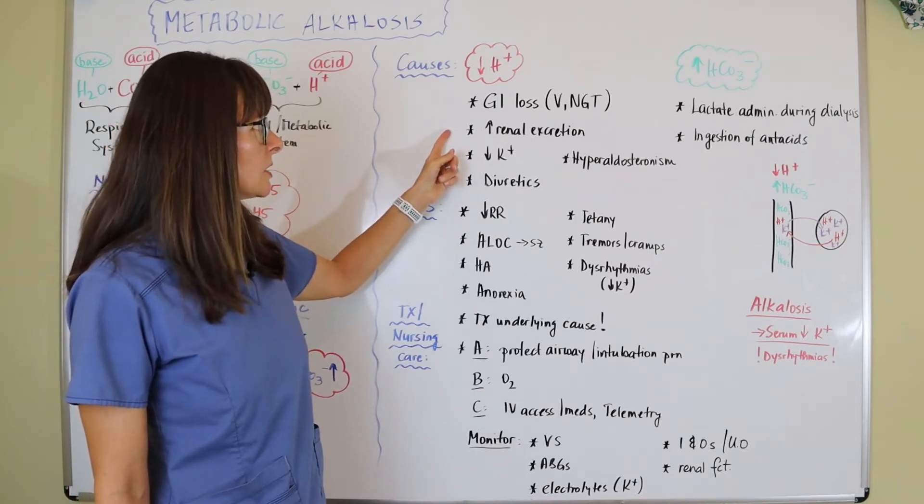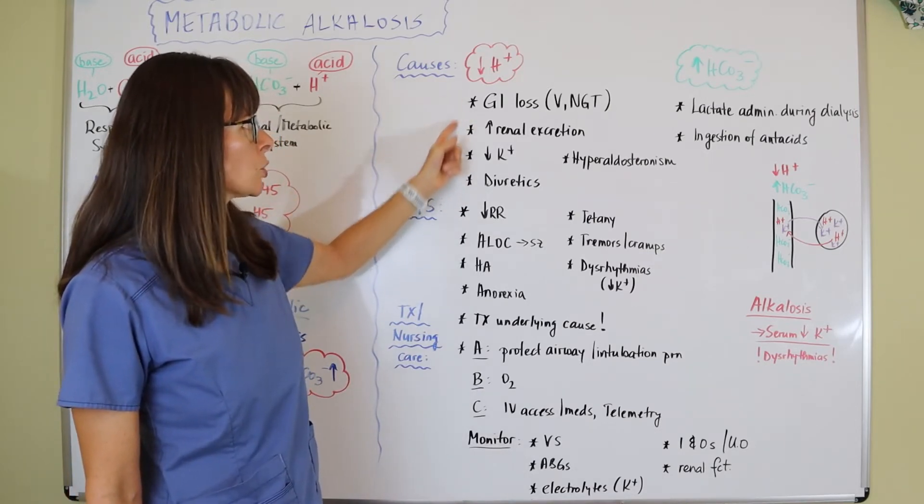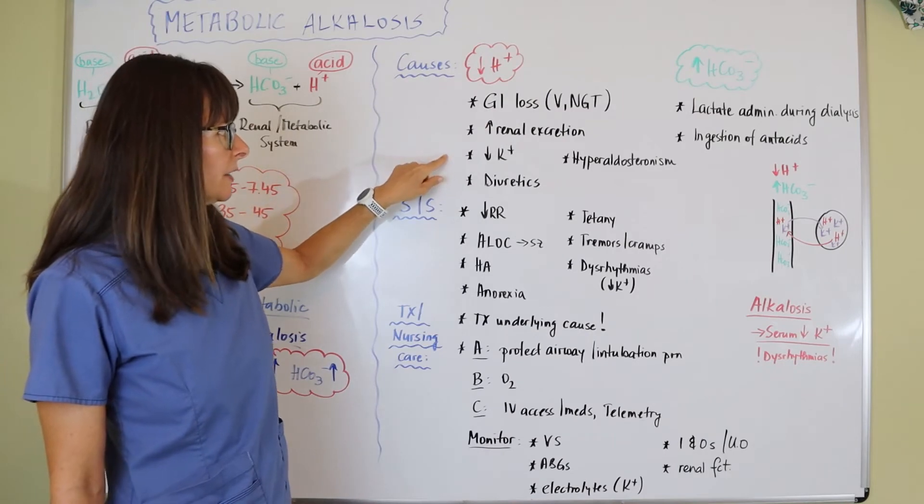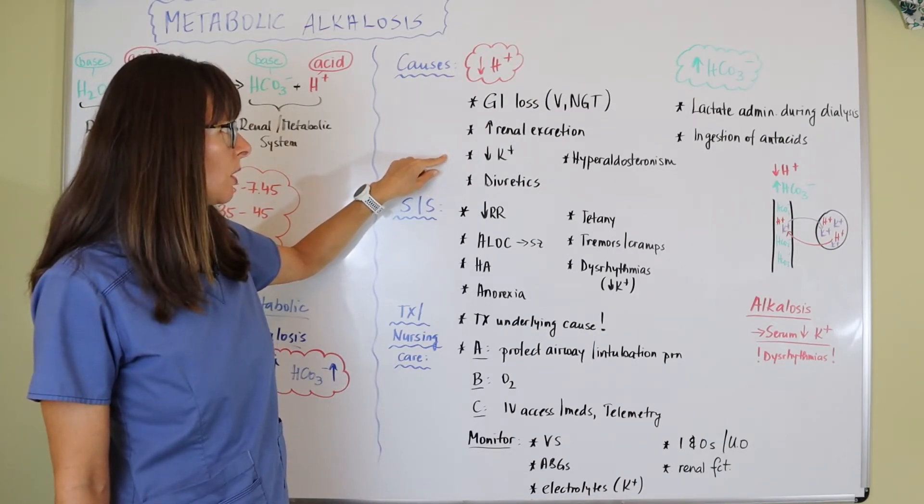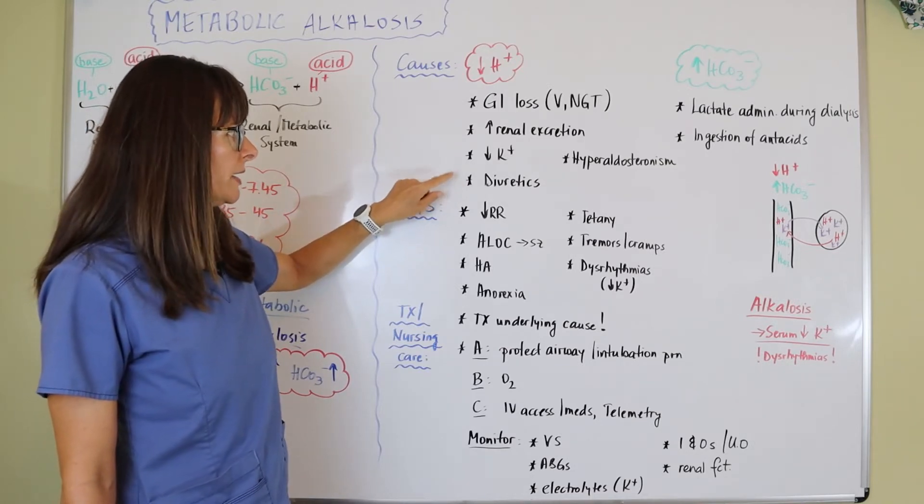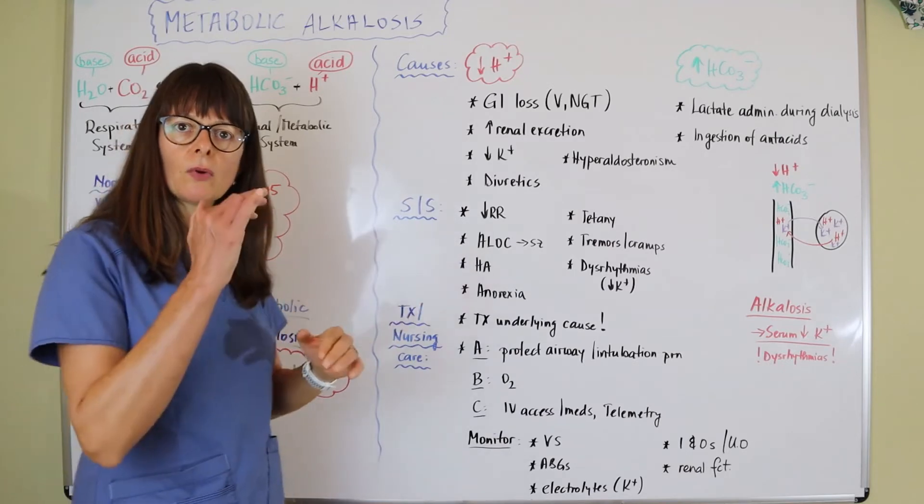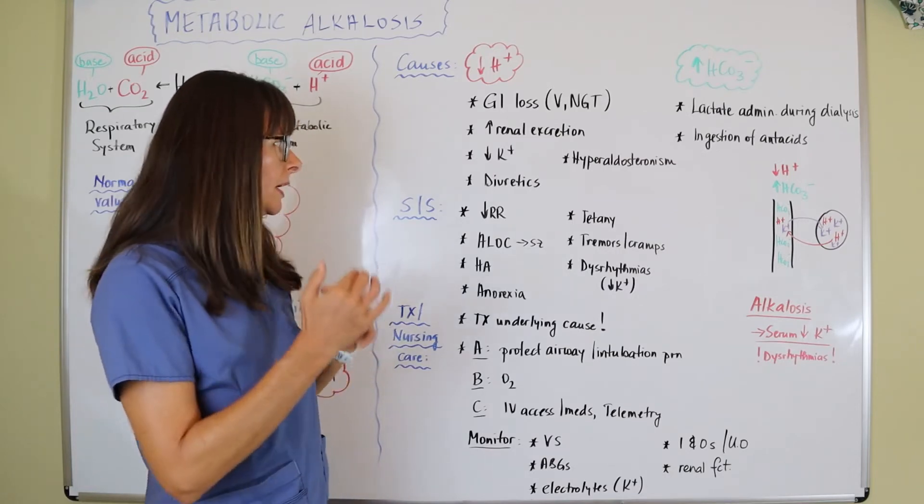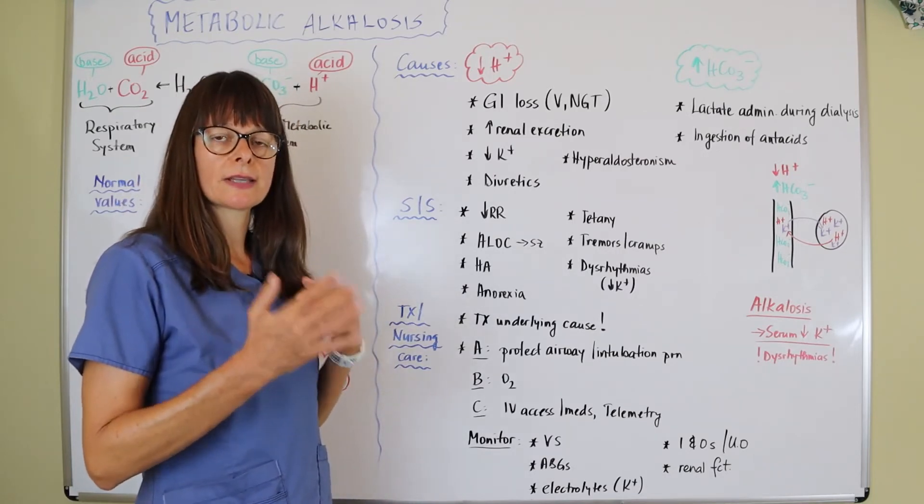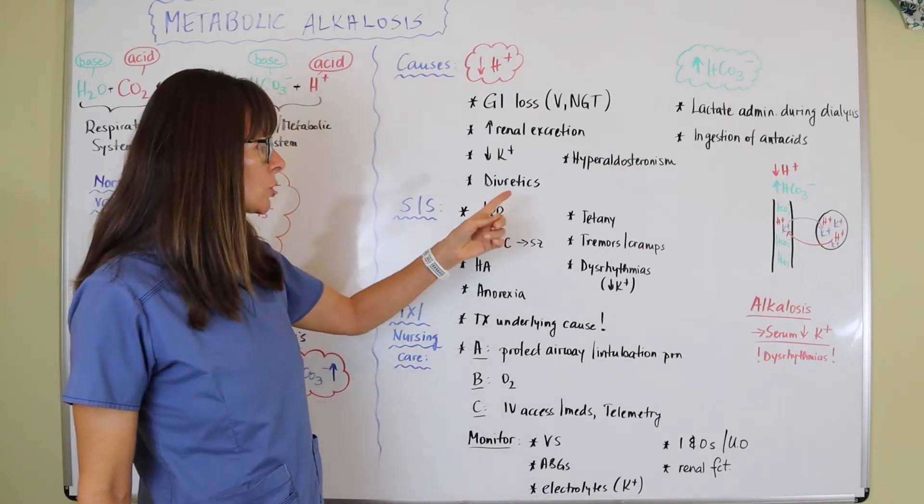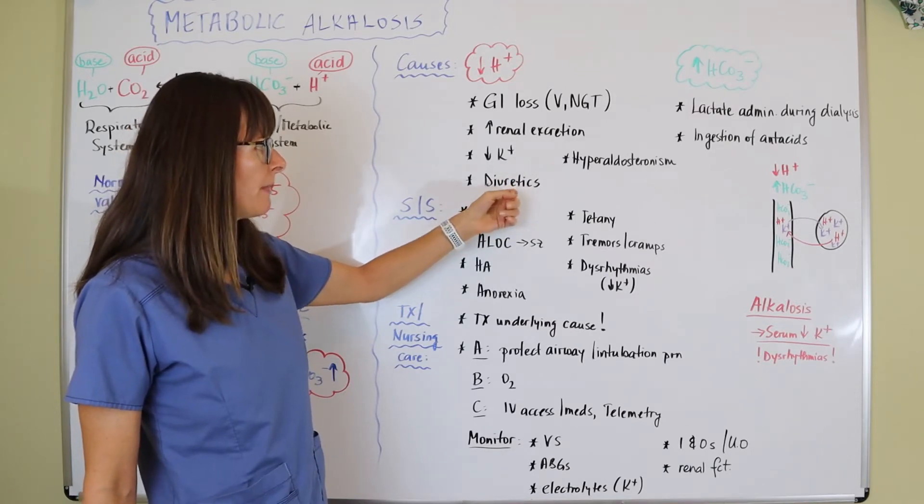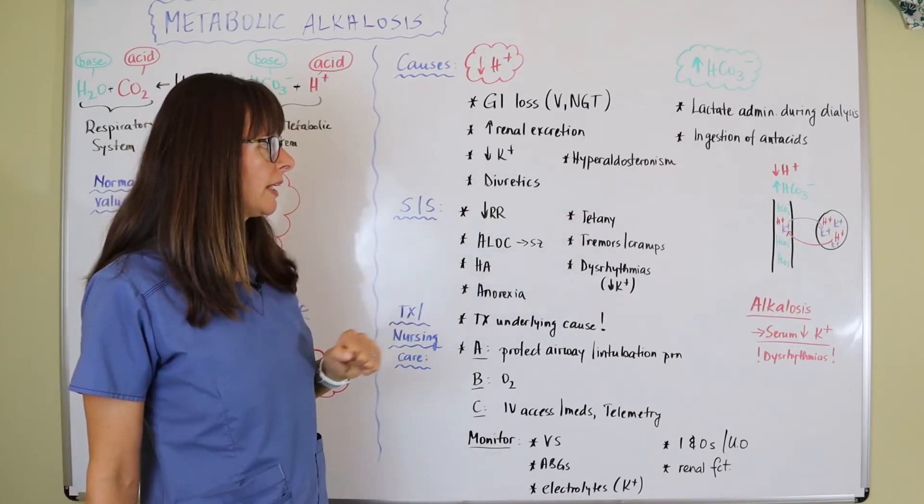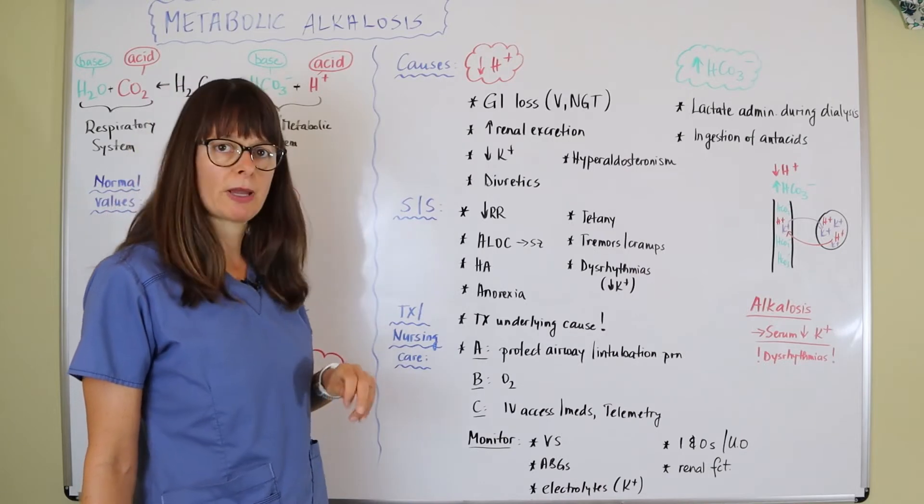When there's something going on with the kidneys where they are excreting too much hydrogen ion, we'll be left with bicarbonate excess. Any kind of cause for serum hypokalemia will cause metabolic alkalosis. Also diuretics, which affect the kidney and the RAS system in regulating electrolytes. And hyperaldosteronism might lead to metabolic alkalosis.